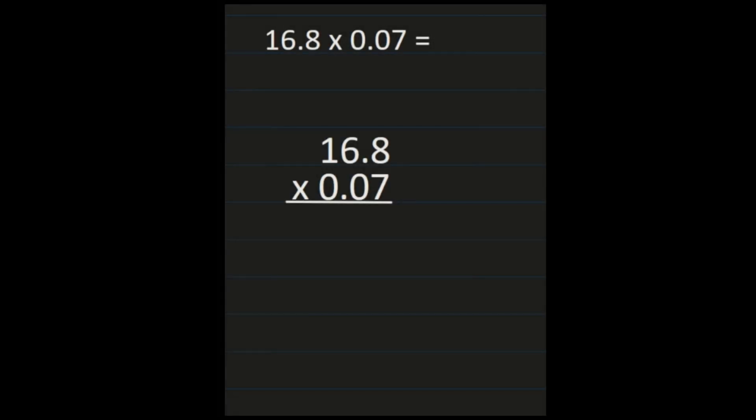Our next example: we have 16 and 8 tenths times 7 hundredths. So we're multiplying by a factor that is less than 1. Our steps aren't going to change though — we're going to set up our problem not worrying about where the decimal points are, because we're going to multiply as if we were multiplying by whole numbers. You may want to circle what you're going to be multiplying first — and first we're going to multiply everything by the 7.